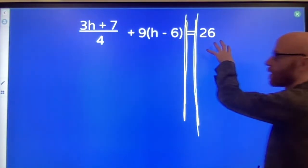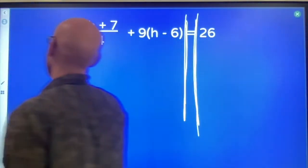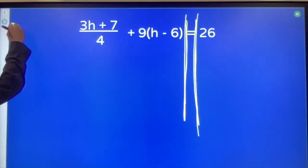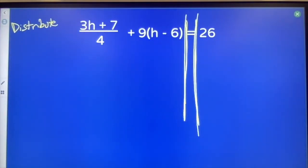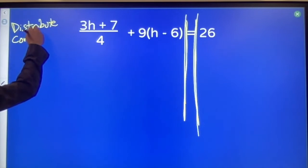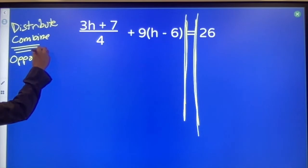We've got a big mess equal to 26. Moves that I'm going to make: Distribute to get rid of parentheses and get rid of fraction bars. Combine things that are alike after I've done both of those things, then I'm ready to use my familiar opposites, opposite operations.